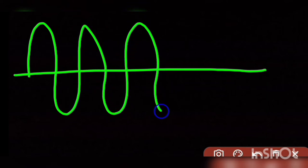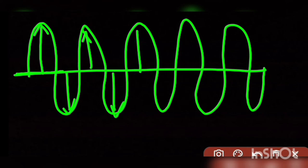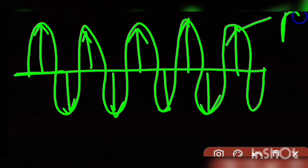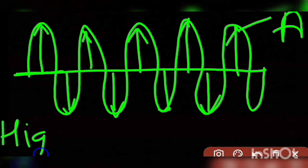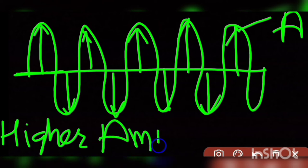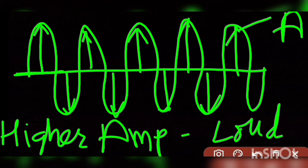To understand this, let's take an example. Here we have a wave moving from left to right. That is its mean position and that is its extreme position. The distance between the mean position and the extreme position is the amplitude. When the amplitude of the wave is high, loud sound is produced. So, more the amplitude of the vibration, the louder the sound produced.